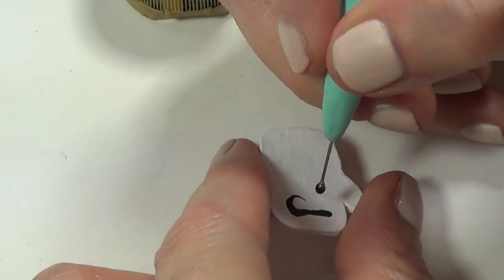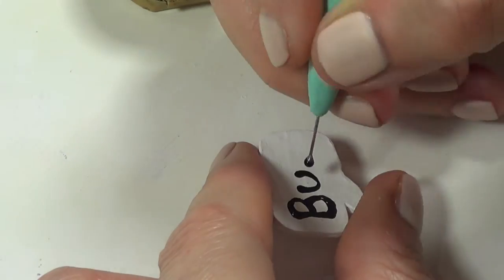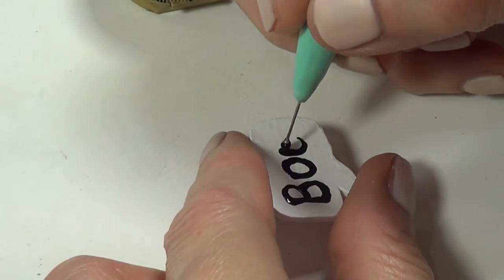For the white ones, I'm going to be taking some black acrylic paint, and I'm just going to write boo, and for the black ones, just make sure you use the white acrylic paint.